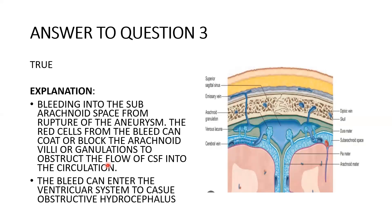Back to the question — how does subarachnoid hemorrhage cause obstructive hydrocephalus? There are two mechanisms. First, when the aneurysm ruptures and blood enters the subarachnoid space, red blood cells can coat the arachnoid villi. Once the villi are coated, they cannot absorb CSF and return it to circulation. That is one way subarachnoid hemorrhage can cause obstructive hydrocephalus.